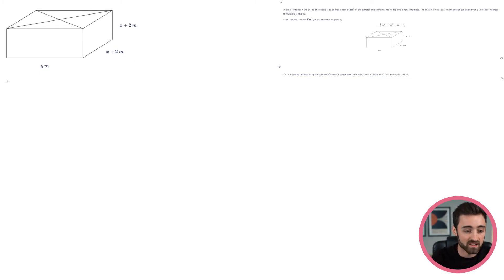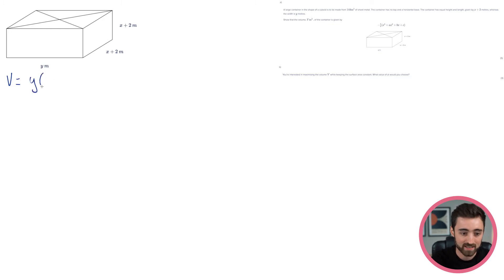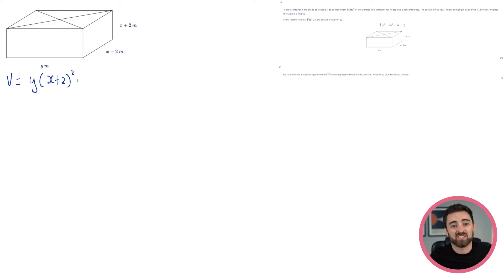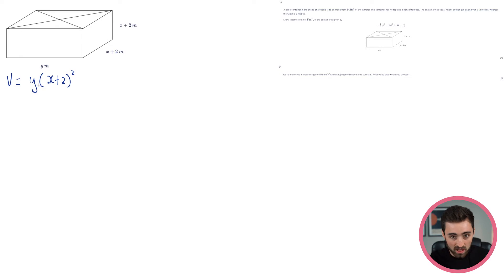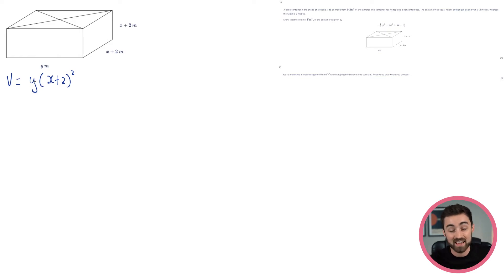We know that we can get the volume of this thing — I don't think that's the hard bit. The volume of a cuboid is basically just going to be all the sides times together. So it's going to be y times (x+2), and then times another (x+2). So that's going to be (x+2) squared. Well, that's not the answer, because the answer is given in terms of x only. So we're going to want to use a different piece of information or equation to substitute y out for something in terms of x. And the piece of information we're going to use is the surface area.